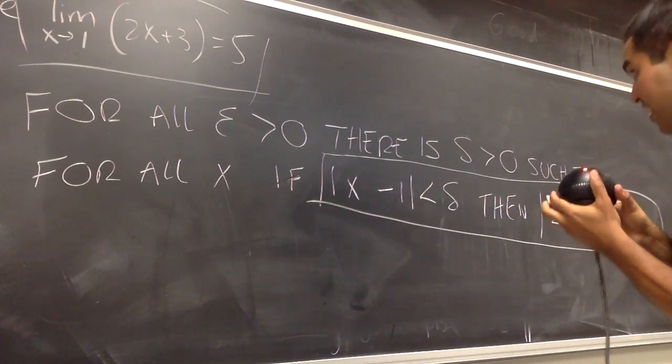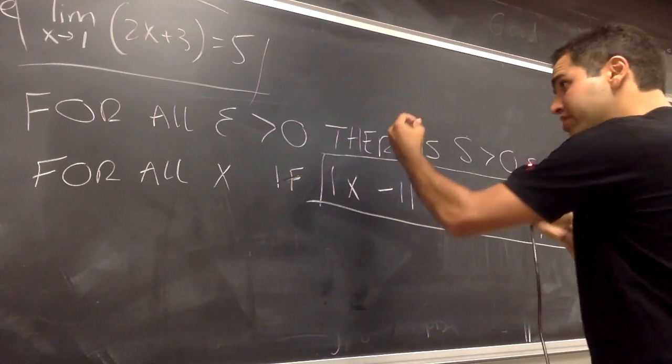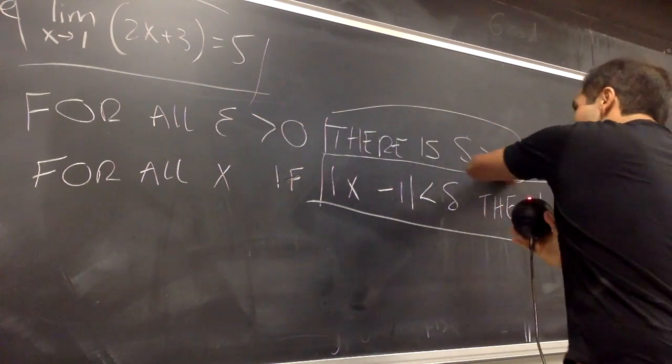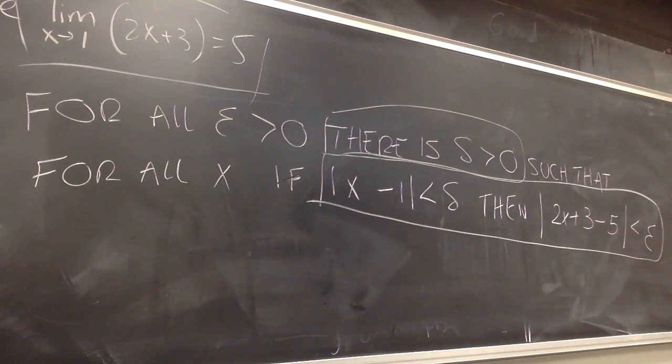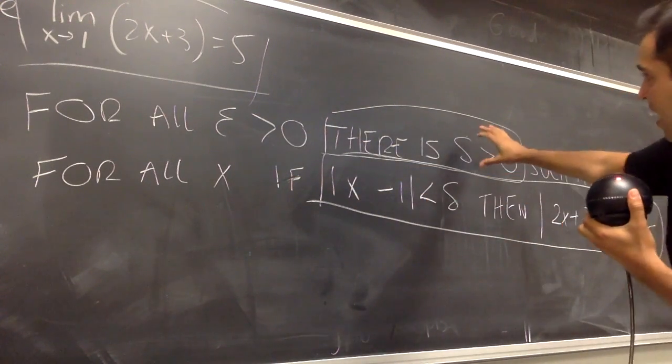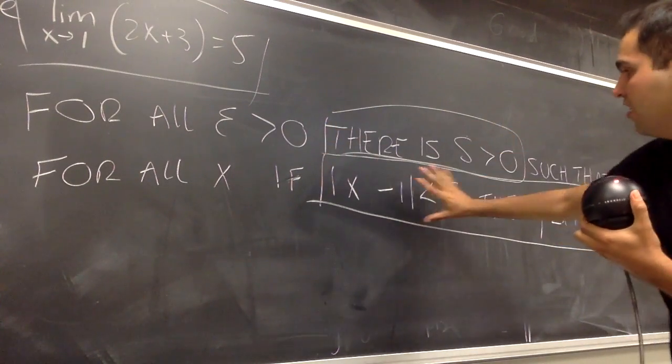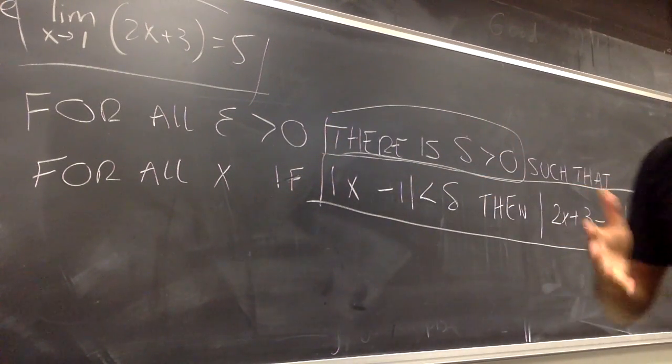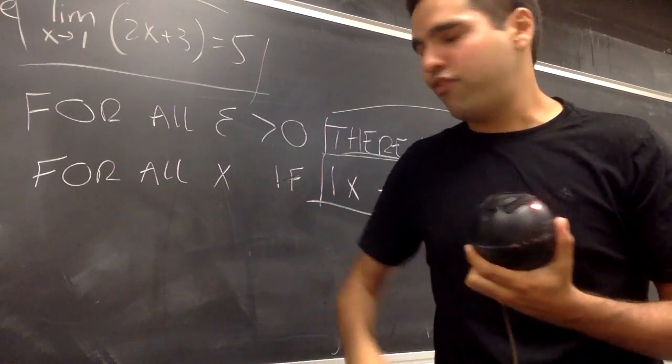For Epsilon greater than 0, there is Delta. Whenever you see there is Delta, you have to find this Delta. So, if I give you an Epsilon, you have to find me some Delta depending on Epsilon such that this is true. And so, let's do this first.